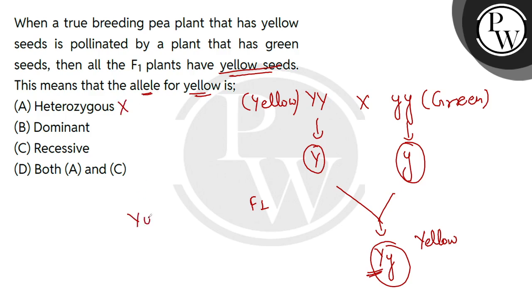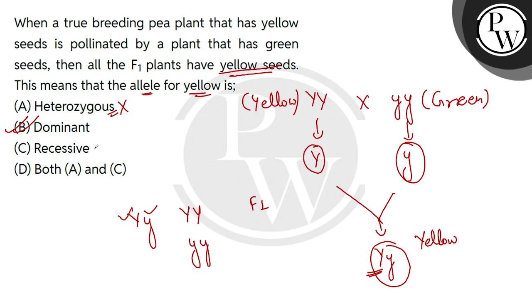Heterozygous condition means that one allele is dominant and the other allele is recessive. If I talk about homozygous condition, both alleles are the same. When we talk about heterozygous or homozygous, the yellow allele is dominant because it will express in the F1 generation, and green is recessive because it will not express in the F1 generation.